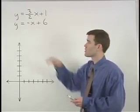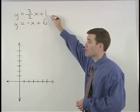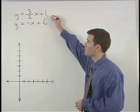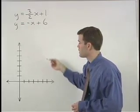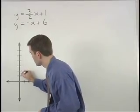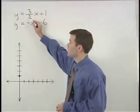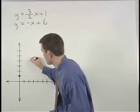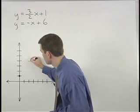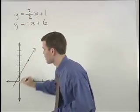So let's start by graphing the line y equals 3 halves x plus 1. It has a y-intercept of 1 and its slope is 3 halves. So we go up 3 and over 2, and we have our first line.